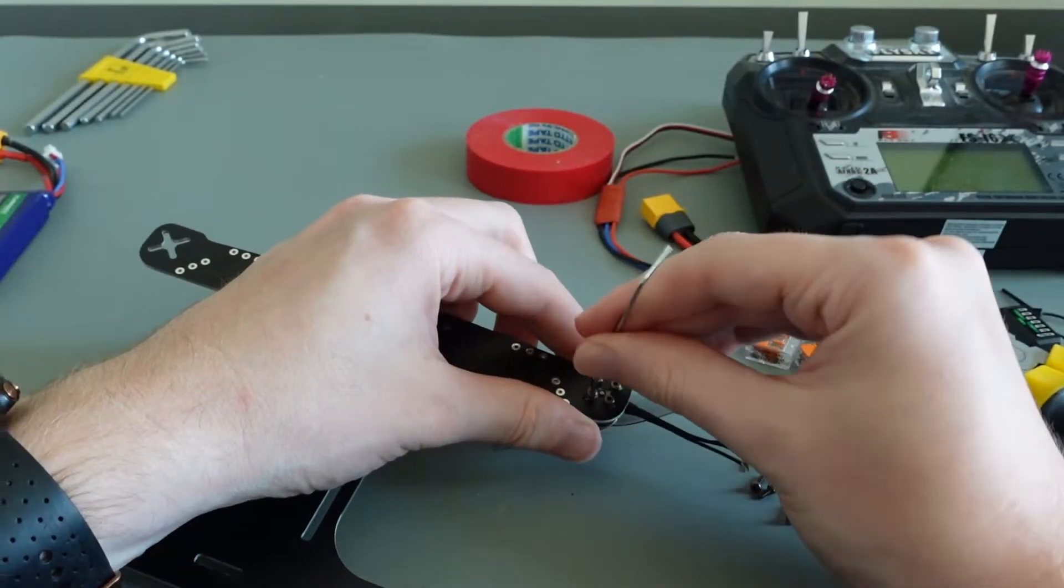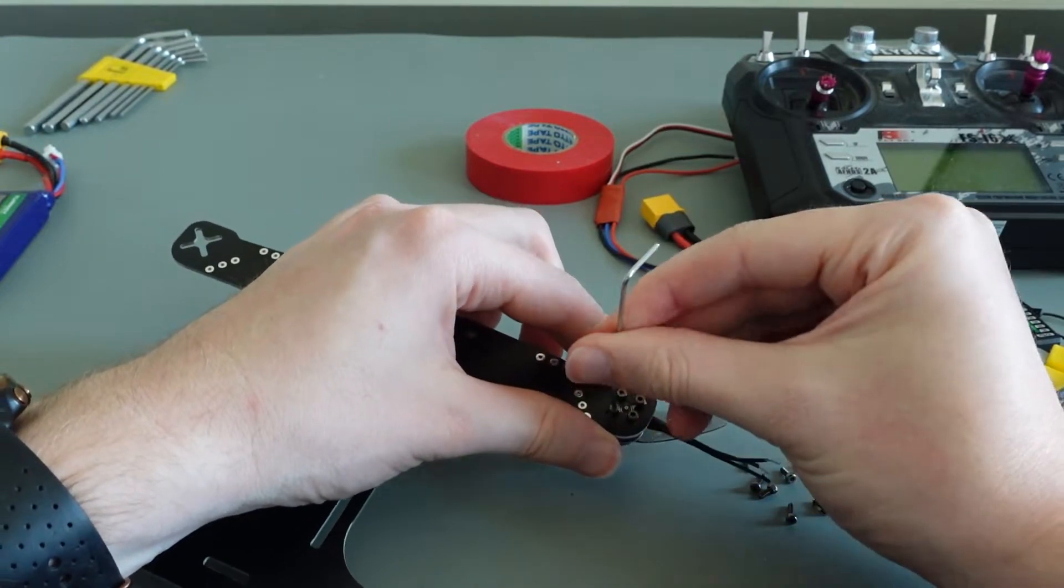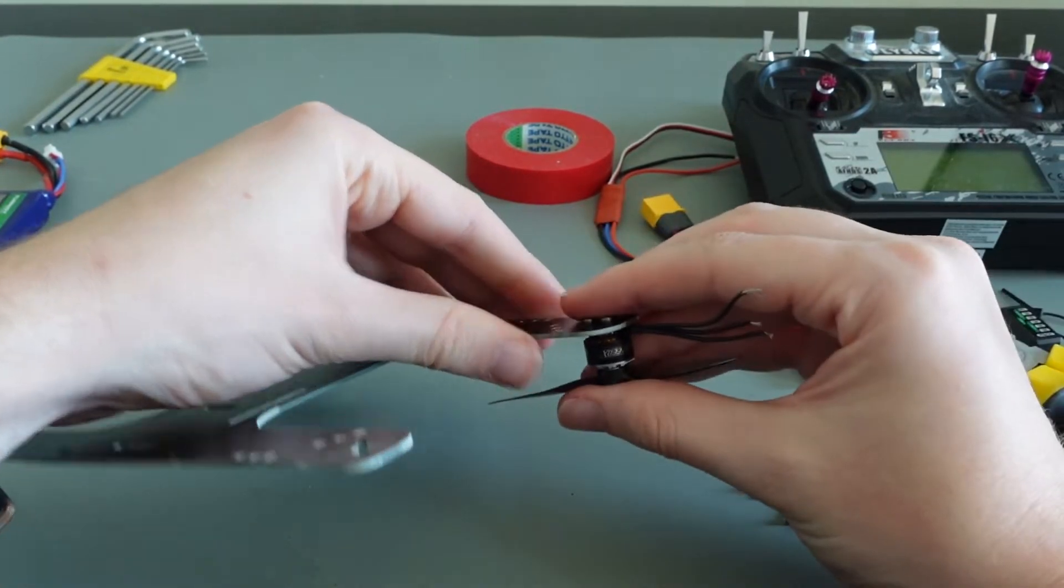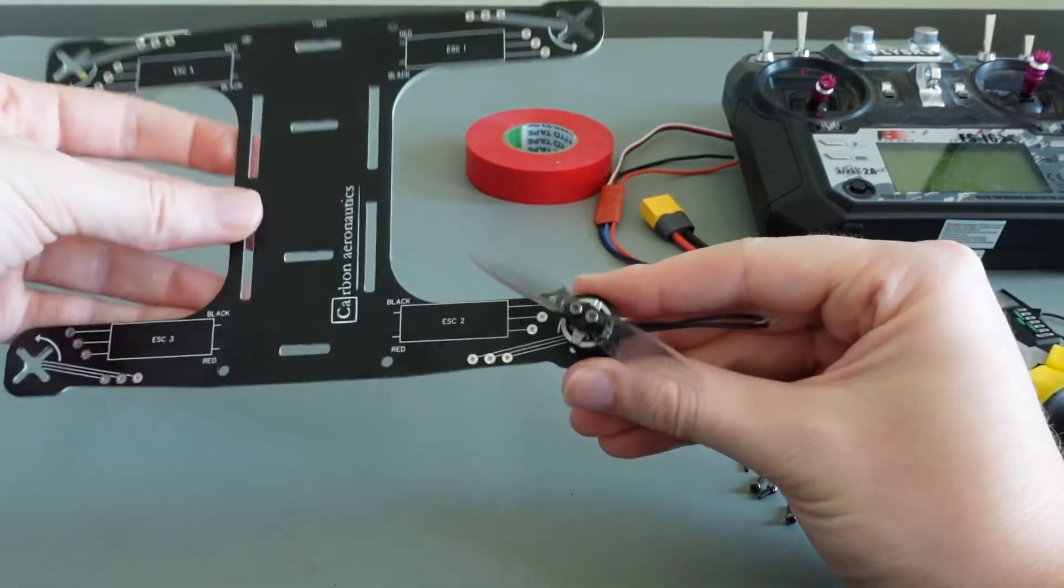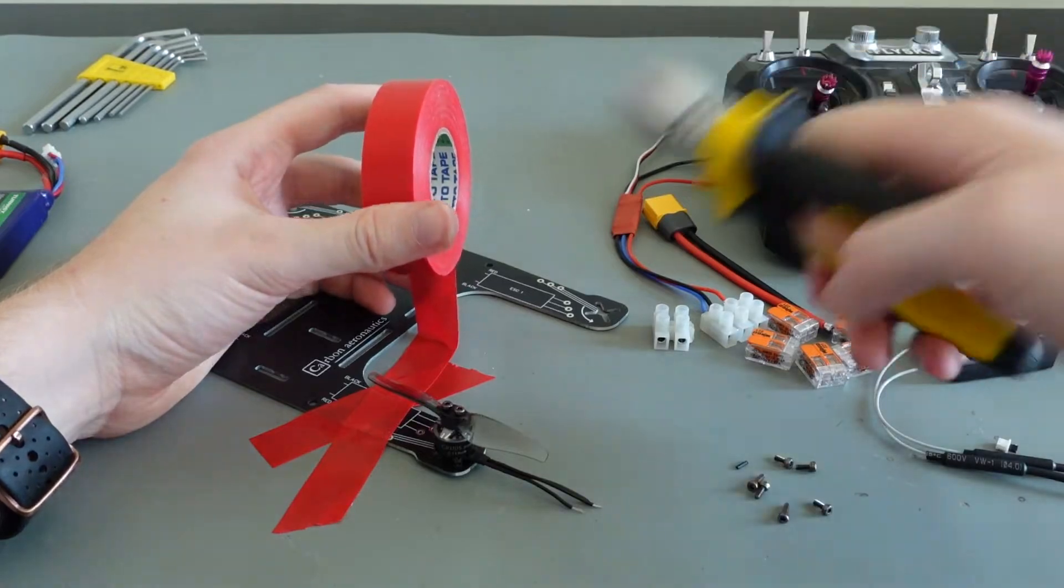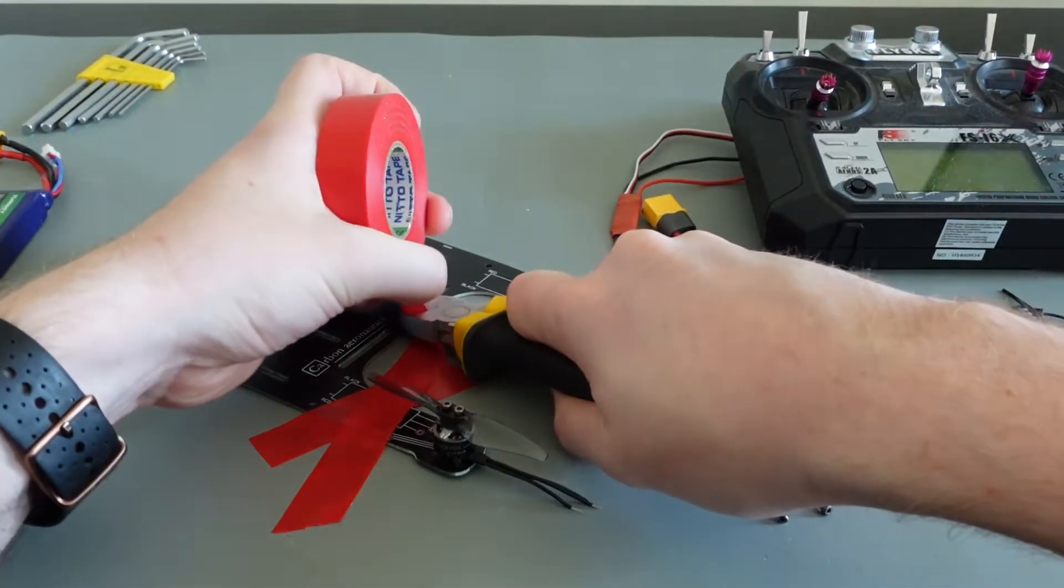Attach the motor to the quadcopter frame with the 4 shortest screws. Make sure that none of the screws touch the motor windings to avoid damage. Attach the quadcopter frame firmly to your desk using tape.